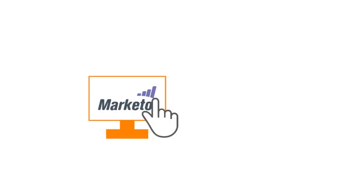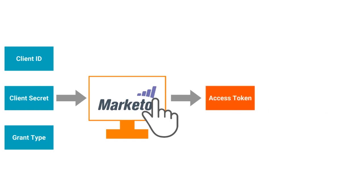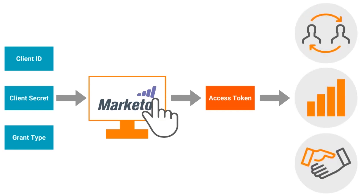To access Marketo, we need to provide inputs like client ID, client secret, and a grant type, which returns an access token as output. The access token is then used for further interactions with the Marketo system.